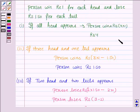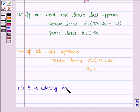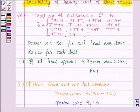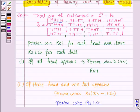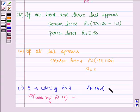So these are the five amounts of money we can have after four tosses. Now we have to find the probability of having these amounts. In the first case, E is the event of winning rupees 4. The person wins rupees 4 if he gets all heads. There is only one case in which he gets all four heads, so the number of outcomes favorable to E is 1. The probability of winning rupees 4 is 1 upon 16, since the total number of outcomes is 16.